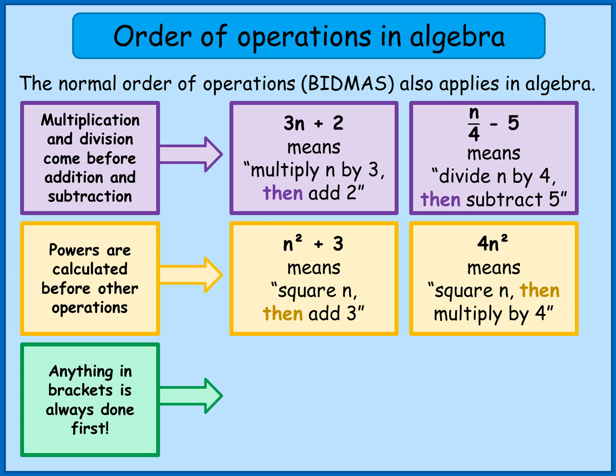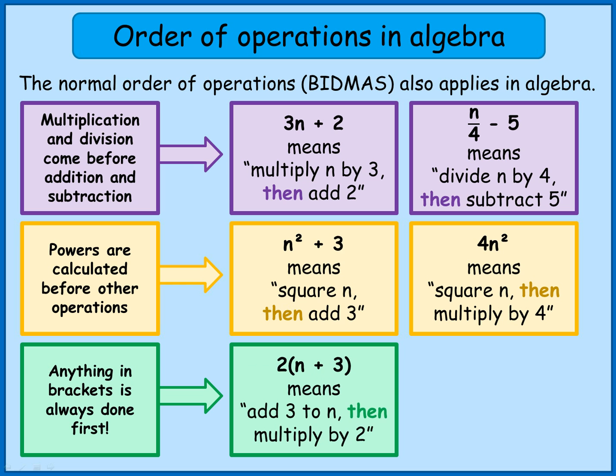And just like BIDMAS with numbers, anything in brackets is always done first. So if I have the statement 2(N plus 3) and N plus 3 is in brackets, the first thing I would do is add 3 to N and then I'd deal with this 2. Now this 2 outside this bracket means I'm multiplying everything inside the bracket by 2. So I would first of all add 3 to N and then multiply the entire answer by 2.